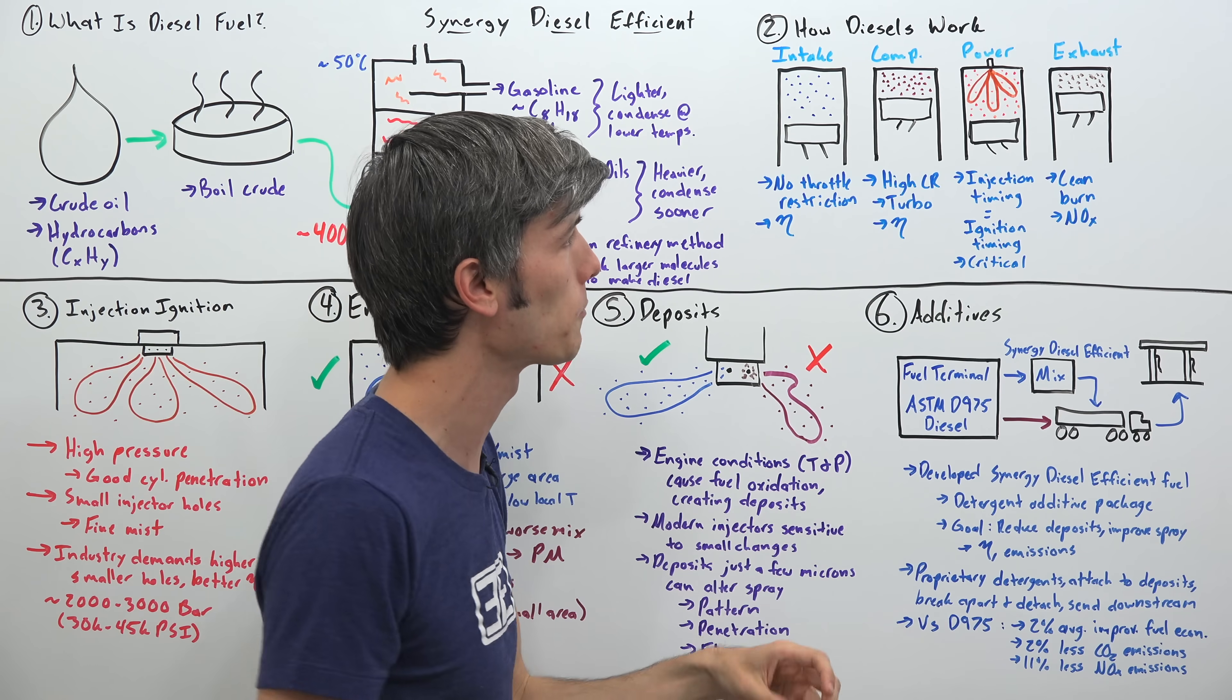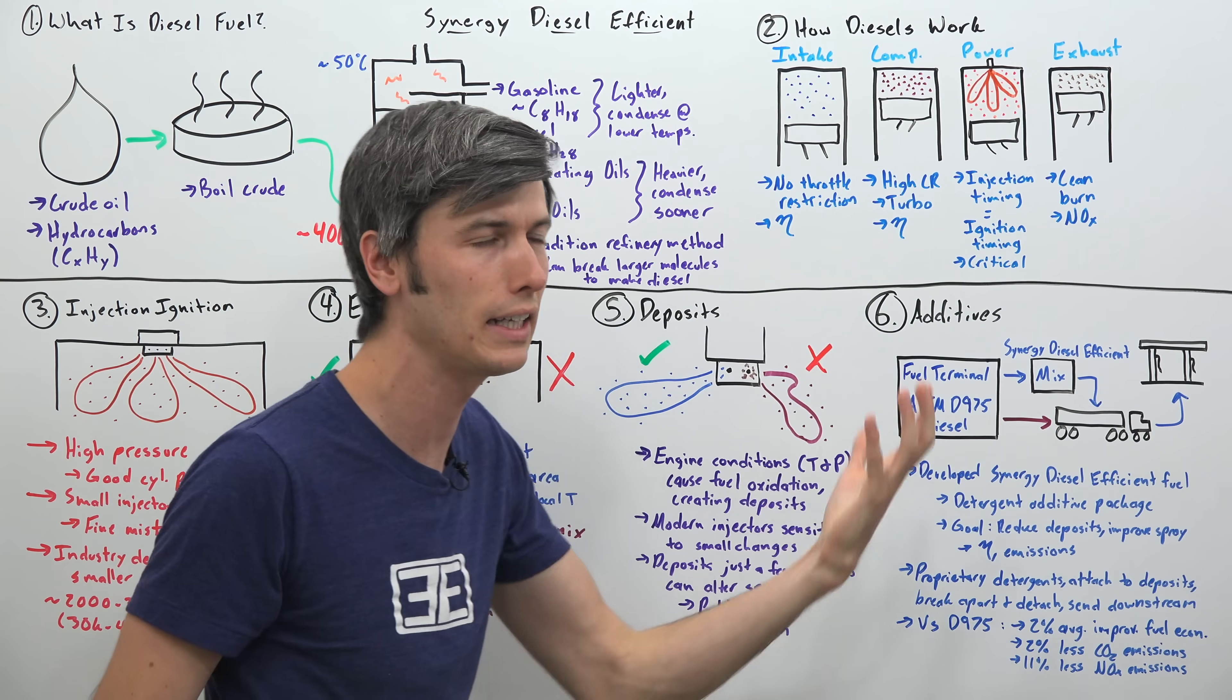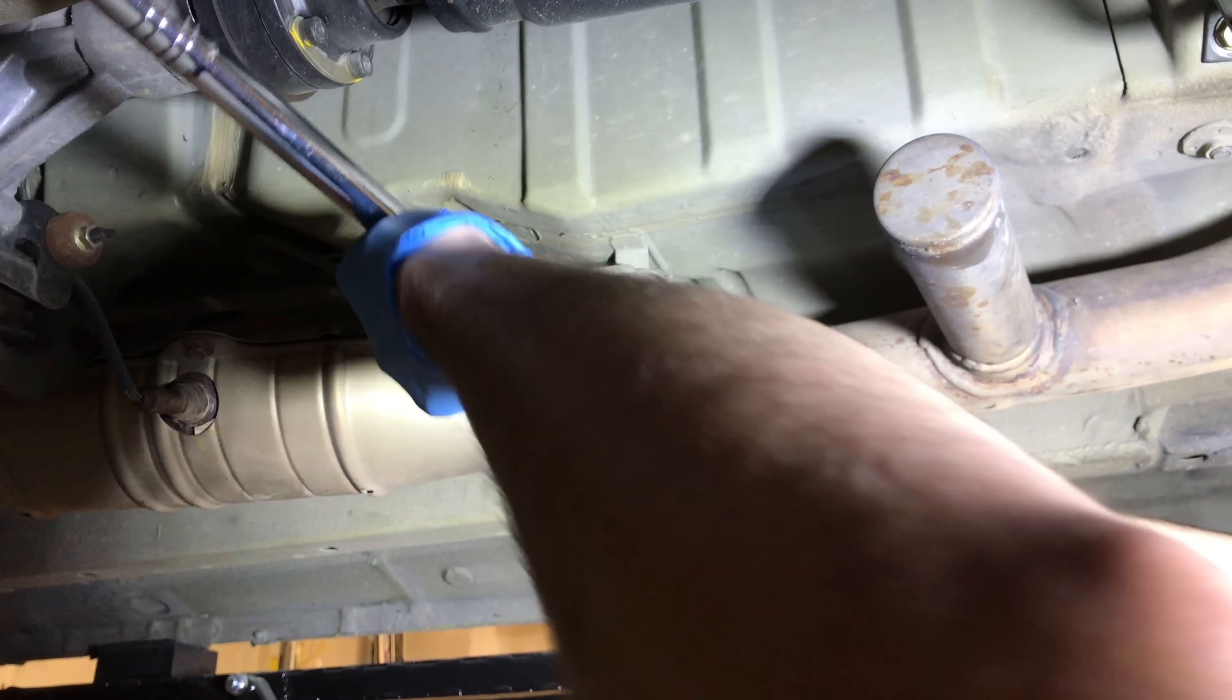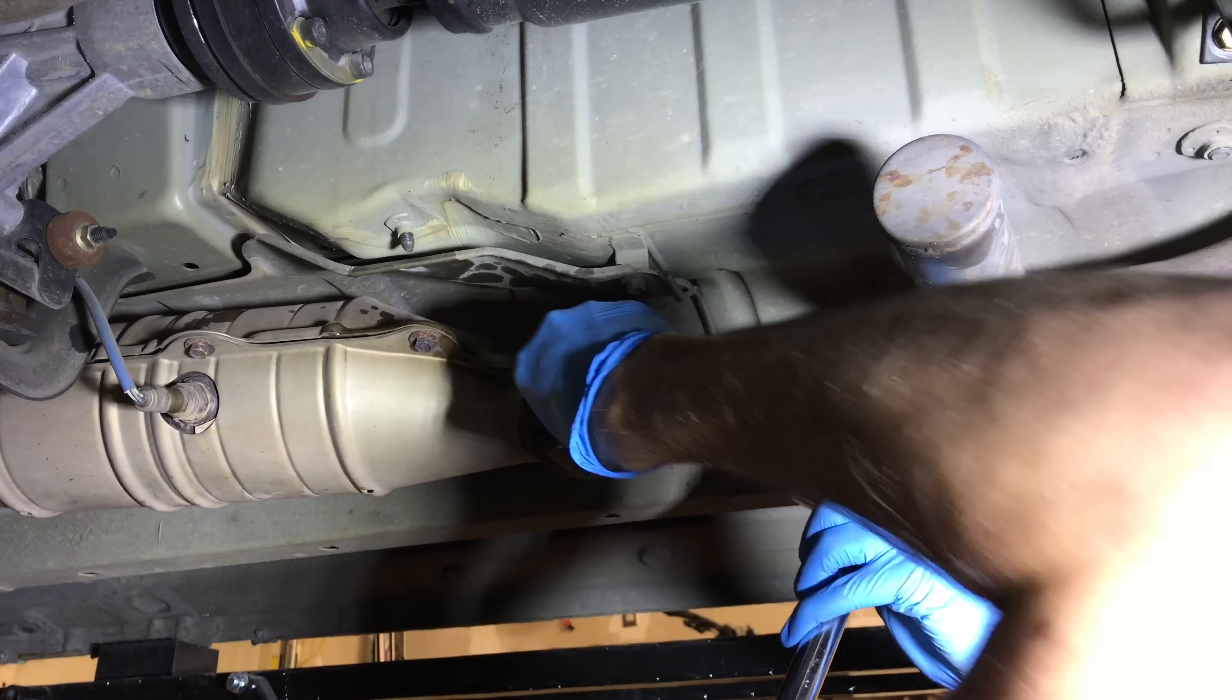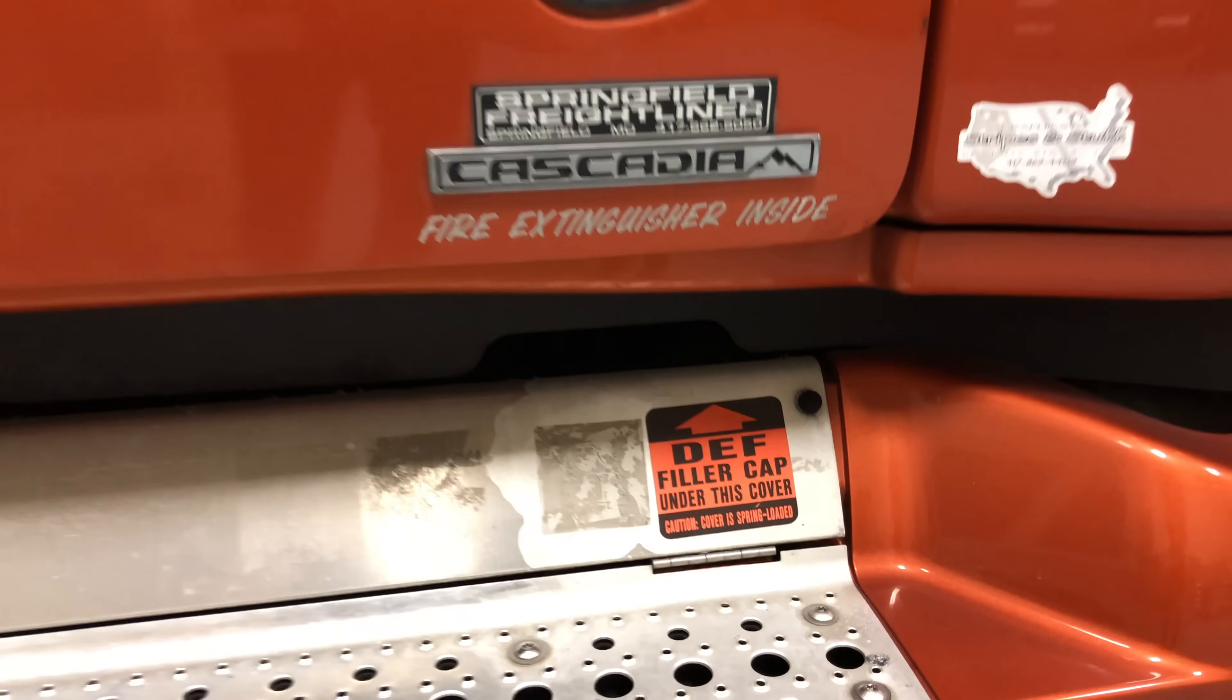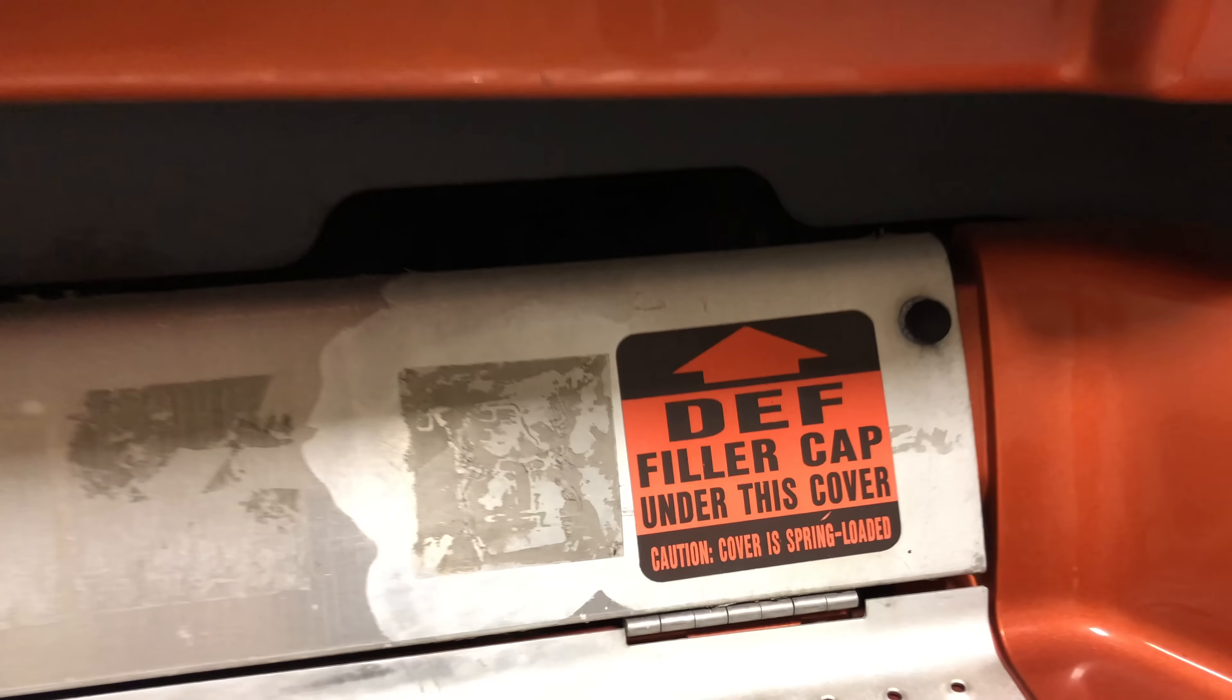And then you have your exhaust cycle, and a difference versus gasoline here is that diesels tend to run very lean. As a result, they have abundant oxygen available in the exhaust, which means three-way catalytic converters like those used with gasoline engines aren't effective. So different strategies like urea injection are used.